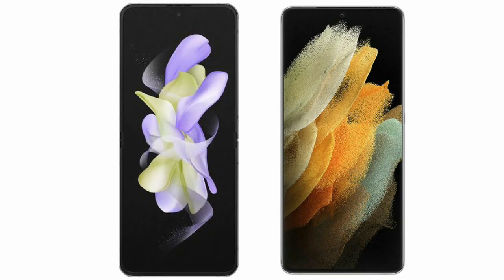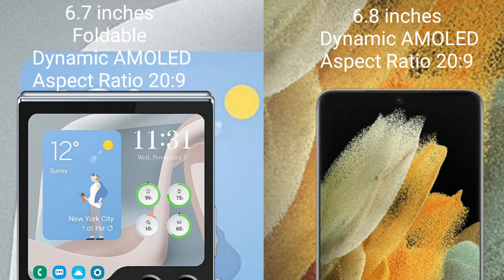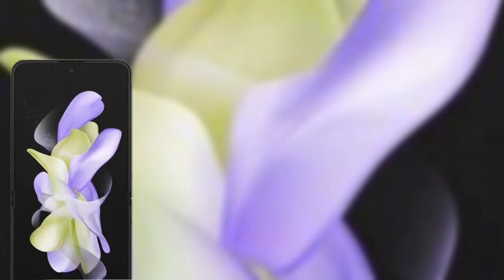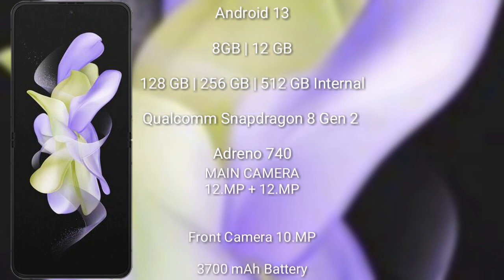I will compare the new Samsung Galaxy Z Flip 5 with Samsung Galaxy S21 Ultra. Samsung Galaxy Z Flip 5 comes with a 6.7-inch foldable dynamic AMOLED display and aspect ratio 21:9. Samsung Galaxy S21 Ultra comes with a 6.8-inch dynamic AMOLED display and aspect ratio 22:9.